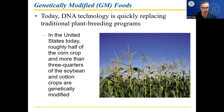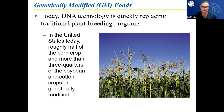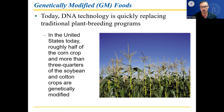In the United States today, roughly half the corn crop and more than three quarters of the soybean and cotton crops are genetically modified. If you want to learn more about how this affects consumers and the food industry, there's a movie called Food Inc. that talks a lot about the company Monsanto and how they own the patents to genetically modified seeds, preventing farmers from planting anything other than those seeds.